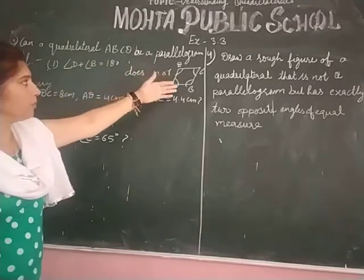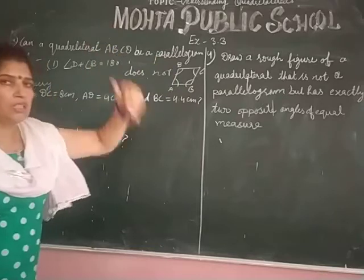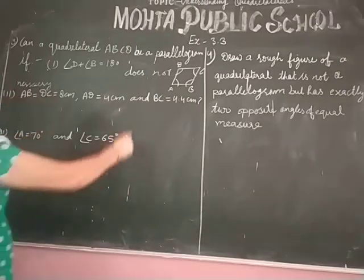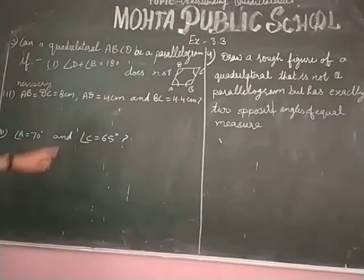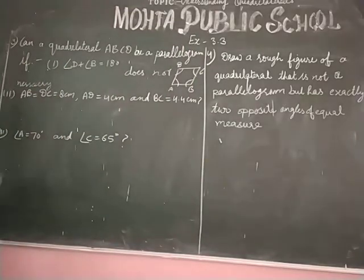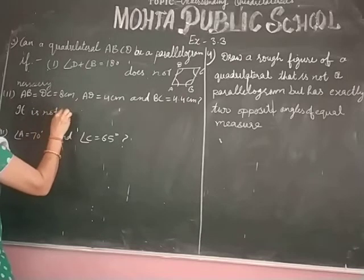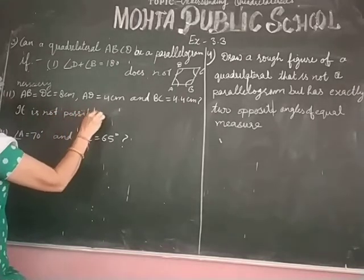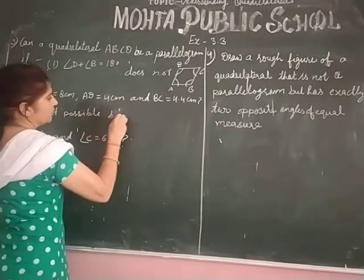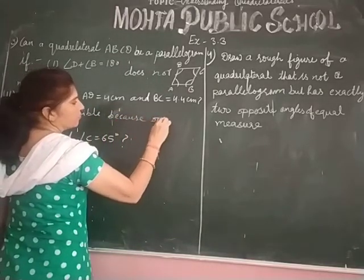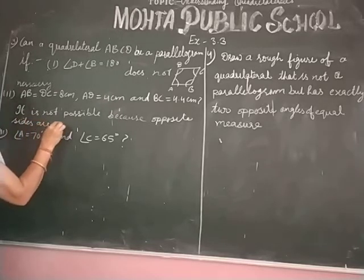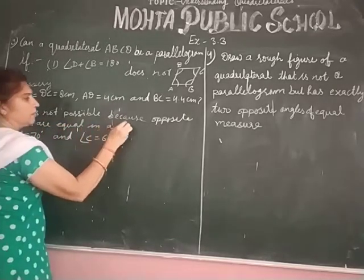If the sides differ, it is not a parallelogram; if they match, then it is a parallelogram. For example, 4.4 cm — it is not possible, because opposite sides are equal in a parallelogram.